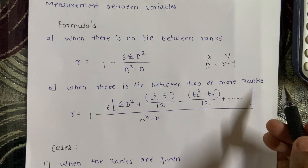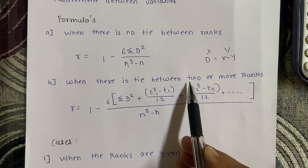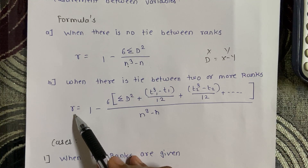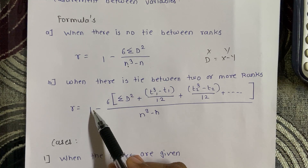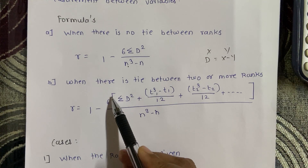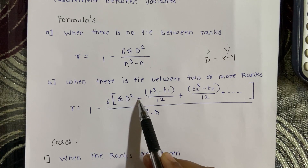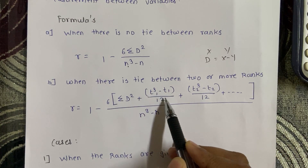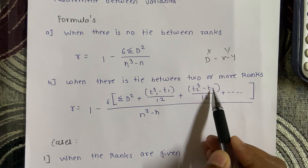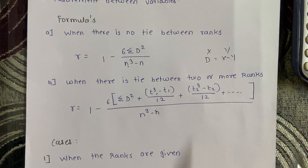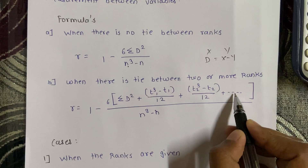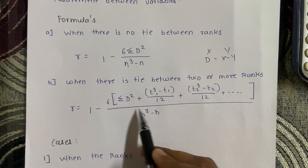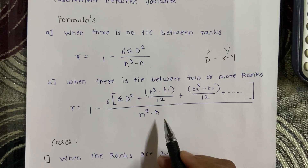The second formula is used when there is a tie between two or more ranks. In that condition, the formula is: r equals 1 minus 6 times, in brackets, summation of d squared plus (t1 cubed minus t1) divided by 12, plus (t2 cubed minus t2) divided by 12, and so on for the number of ties in the example, all divided by n cubed minus n.